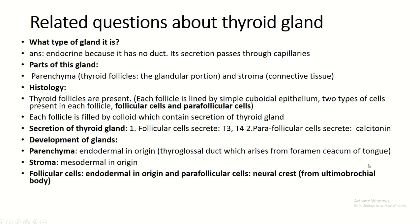Some related questions that may be asked in an examination. What type of gland is it? It is obviously an endocrine gland, because it has no duct and the secretion passes directly through the capillary. What are the parts of this gland? Two parts: parenchyma and stroma.